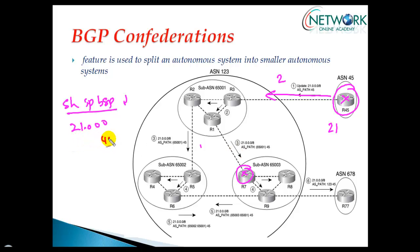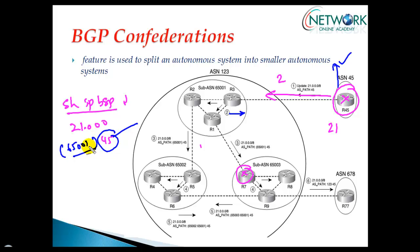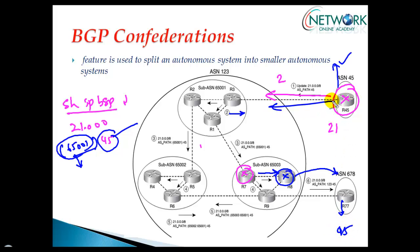The sub autonomous system number will be displayed in close brackets. So whenever you see this information, you understand the outside AS from where it is coming, and the sub autonomous system number inside the BGP confederations. When the update goes from here to the border router, and that border router passes it outside the network, the external router will receive the update showing it came from AS 45 and went through AS 123 — it is not at all aware of the inside sub autonomous system numbers created using confederations.